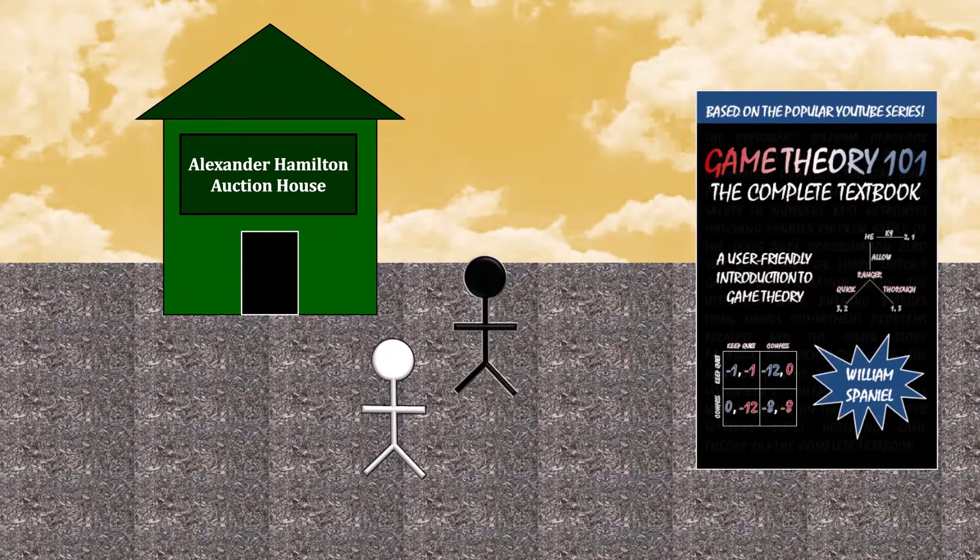Today, they will be auctioning off a first edition copy of Game Theory 101, the complete textbook. You and the stranger are the only ones around who are going to be able to bid on it. This excites both of you because you've always wanted a copy.